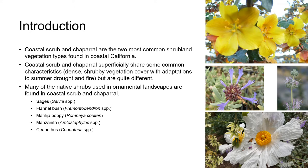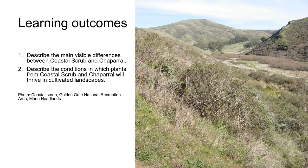It's also worth saying that many of the most popular native shrubs used in cultivated landscapes are found in Coastal Scrub and Chaparral, such as Flannel Bush, Salvias, and Matilija Poppy, pictured on the right. By the end of this unit you'll be able to describe the main visible differences between Coastal Scrub and Chaparral, and you'll have an appreciation for the conditions in which plants from these two communities will thrive in cultivated landscapes.